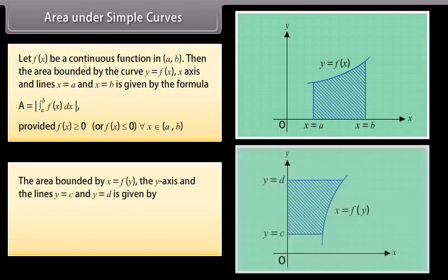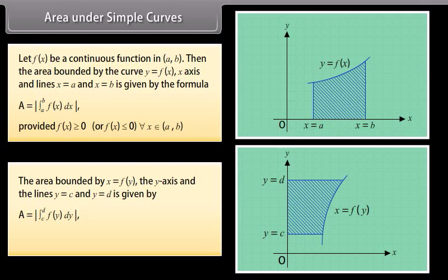The area bounded by x = f(y), the y-axis, and the lines y = c and y = d is given by: A = |∫ from c to d of f(y) dy|, provided f(y) > 0 or f(y) < 0 for each y belonging to [c, d].